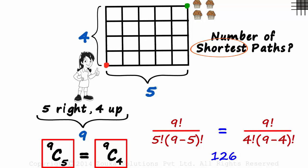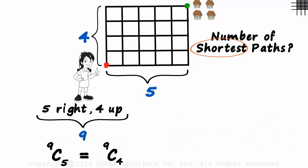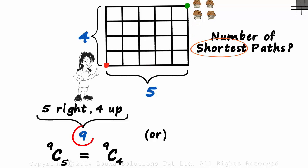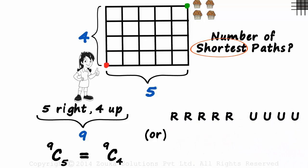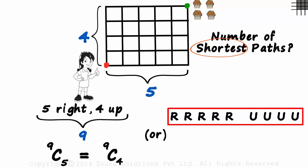126 different shortest paths Zara can take to reach the destination. Okay, we have the answer now — but is there another interesting way to arrive at this answer? Can we use another approach we have used before? Think! So we know that Zara will be moving five units to the right and four units upwards for any shortest path — a total of nine units. So we write R five times and U four times. This is what we need to arrange. All possible arrangements of these nine letters will give us the number of different shortest paths Zara can take.